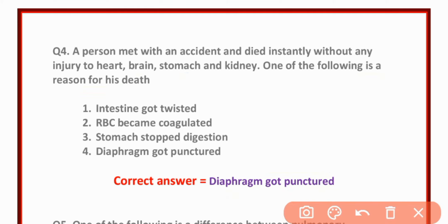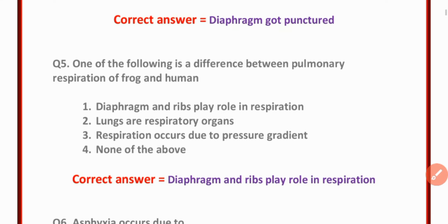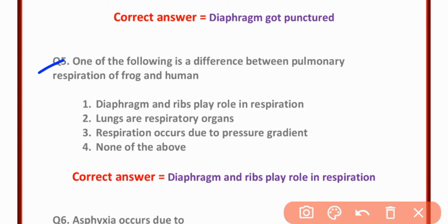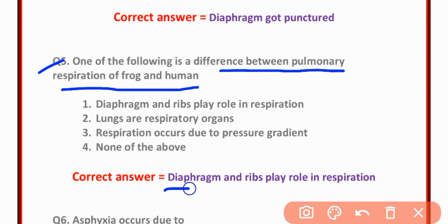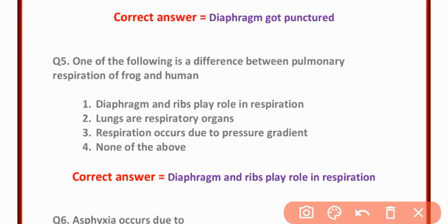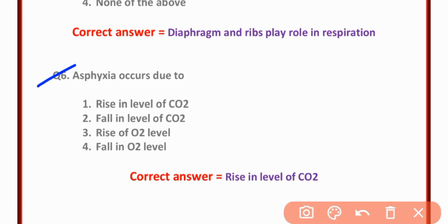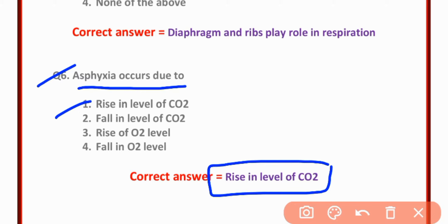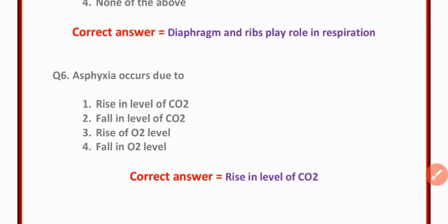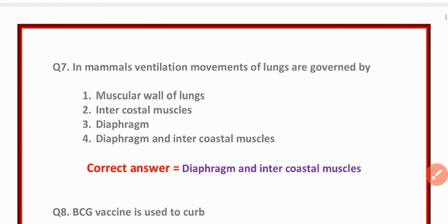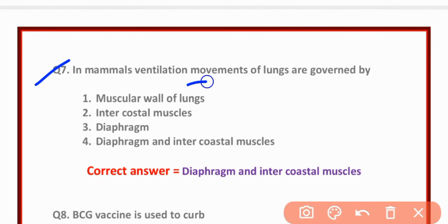The diaphragm got punctured — option four is correct. MCQ number five: One of the following differences between pulmonary respiration of frog and human is that the diaphragm and ribs play a role in respiration — option A is correct. MCQ number six: Asphyxia occurs due to rise in level of carbon dioxide — option one is correct.